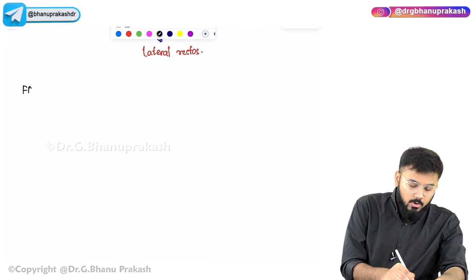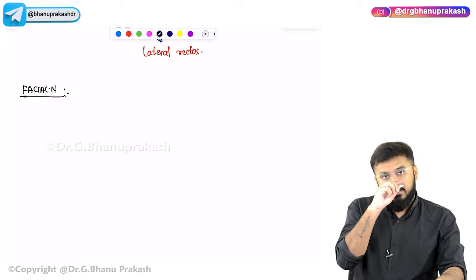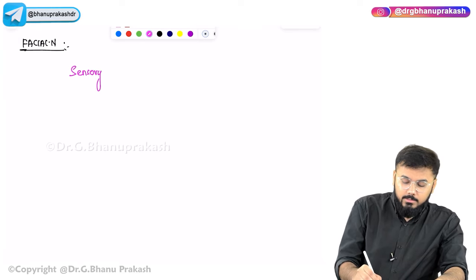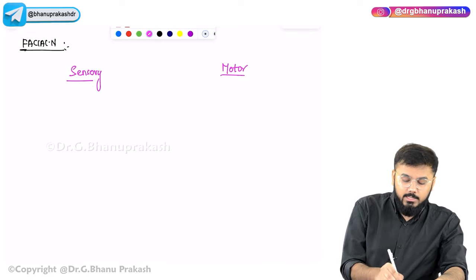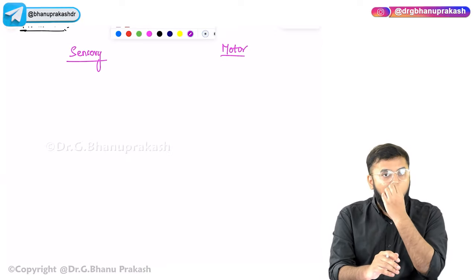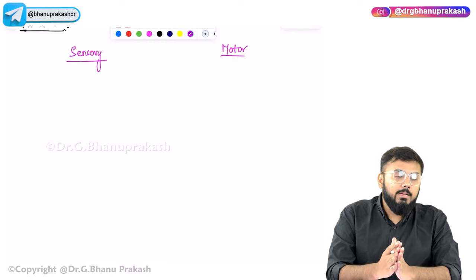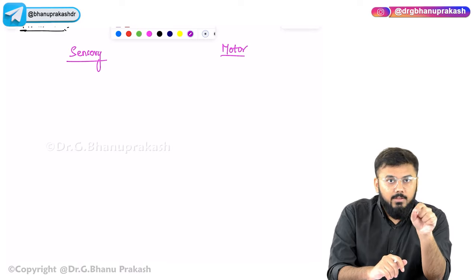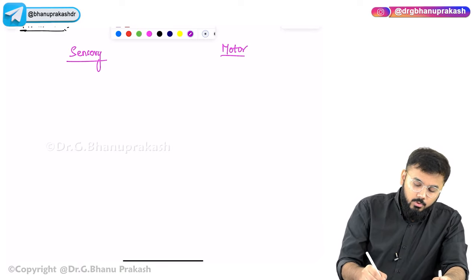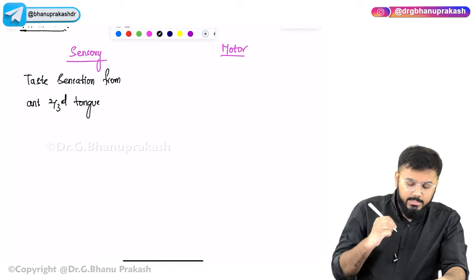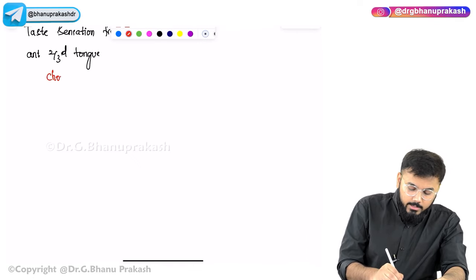The facial nerve (CN VII) is a mixed nerve with both sensory and motor components. For sensory, it carries taste sensations from the anterior two-thirds of the tongue via a branch called the chorda tympani.